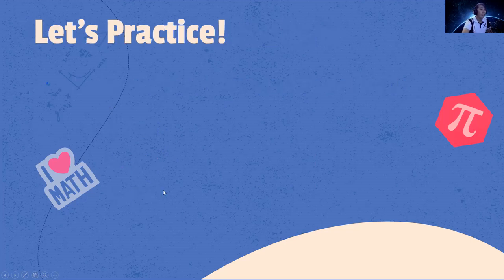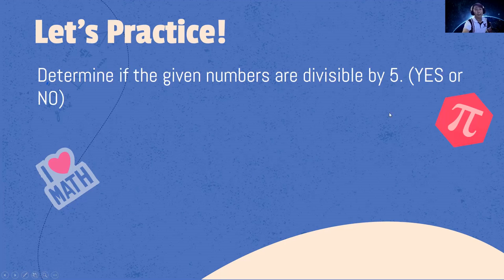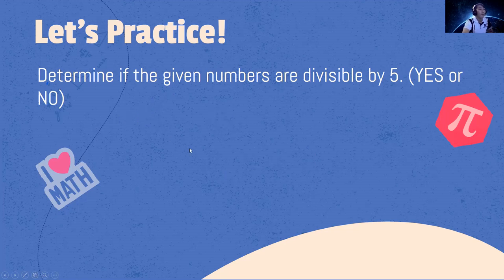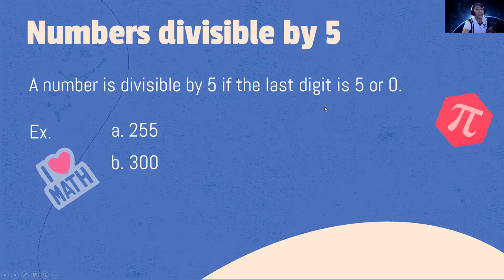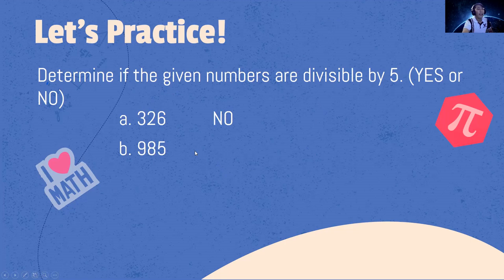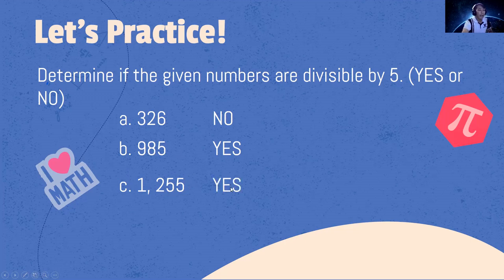Now let's practice. Determine if the given numbers are divisible by 5. 326 is not divisible by 5 because the number ends with 6. 985 is divisible by 5 because it ends with 5. 1,255 is divisible by 5 because it ends with 5. 5,200 is divisible by 5 because it ends with 0.